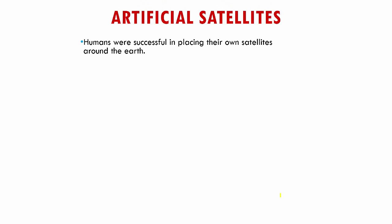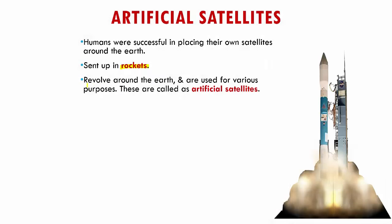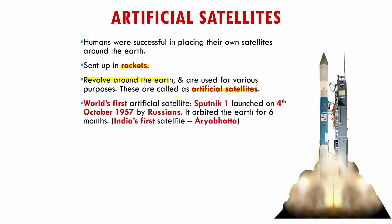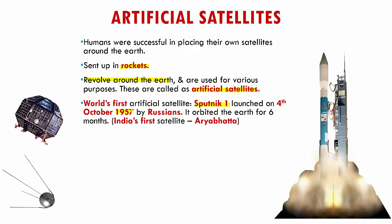Now let's talk about something very interesting called artificial satellites. We said our moon is a natural satellite — now let us see what artificial satellites are. Human beings have successfully placed their own satellites around the earth, sent up there with the help of rockets. These artificial satellites revolve around the earth and are used for various purposes. The world's first artificial satellite was Sputnik 1, launched on the 4th of October 1957 by the Russians, and it orbited the earth for nearly 6 months. India's first satellite was Aryabhata.